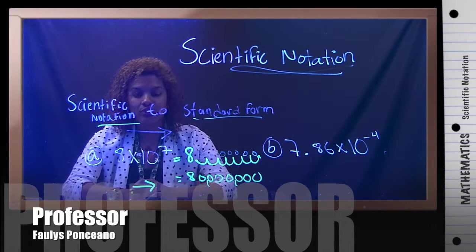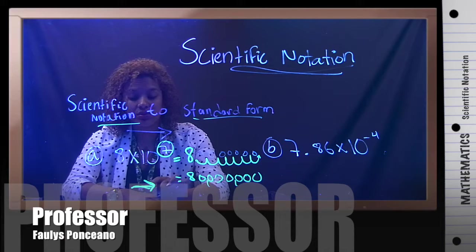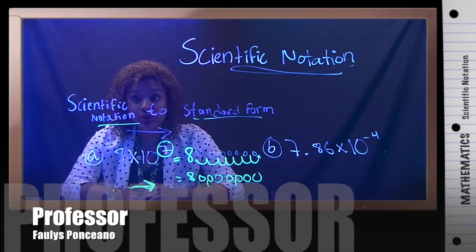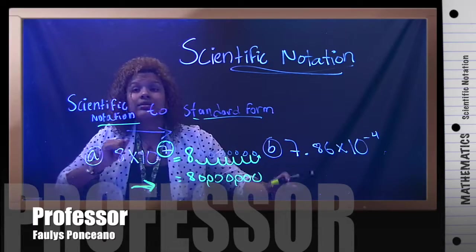Scientific to standard form. Whenever the exponent is positive, you go to the right. The exponent tells you the number of spaces, zeros, you're going to add. Right? Let's see when it's negative.